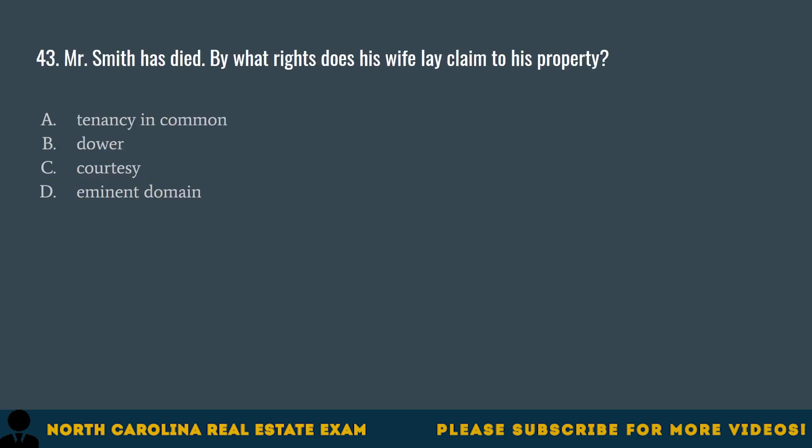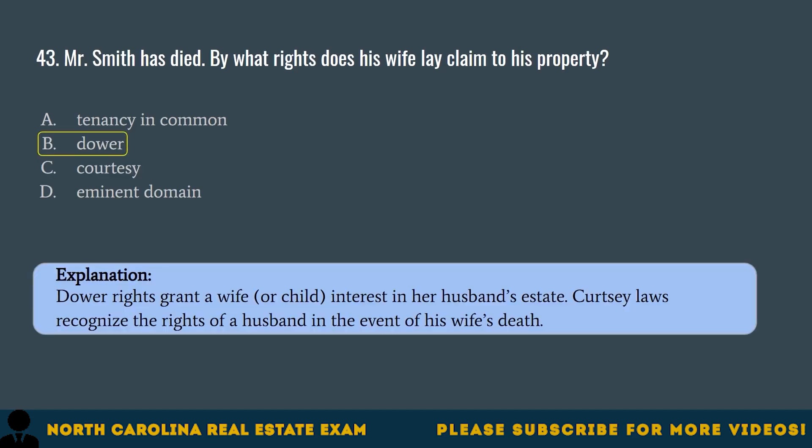Question 43. Mr. Smith has died. By what rights does his wife lay claim to his property? A. Tenancy in common. B. Dower. C. Courtesy. D. Eminent domain. The correct answer is B. Dower. Dower rights grant a wife or child interest in her husband's estate. Courtesy laws recognize the rights of a husband in the event of his wife's death.